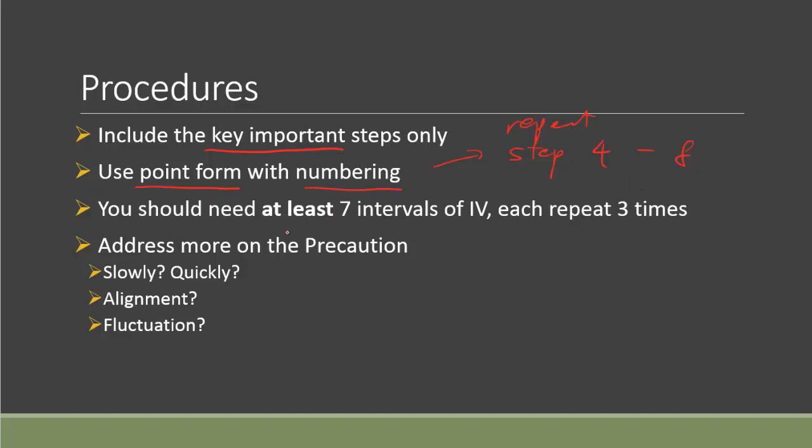Next thing is not only about the procedures, but also the design of the experiment. You should include at least seven intervals of independent variable. And you should always think about whether you could repeat each independent variable for three times. So then you can get to do the error analysis later on, and you can also justify the error bar of the group data later on.